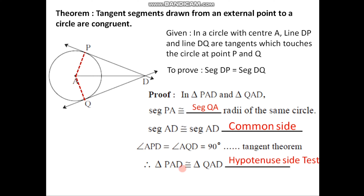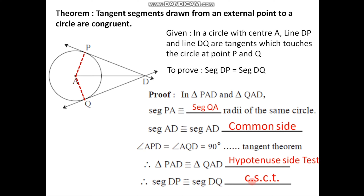As these two triangles are congruent, their corresponding sides must also be congruent. Taking side DP, its corresponding side is DQ, so segment DP is congruent to segment DQ. The reason is corresponding sides of congruent triangles. Thus we have proved that segment DP is congruent to segment DQ, as segment DP and segment DQ are the tangent segments drawn to a circle from an external point — proving that tangent segments drawn from an external point to a circle are congruent.